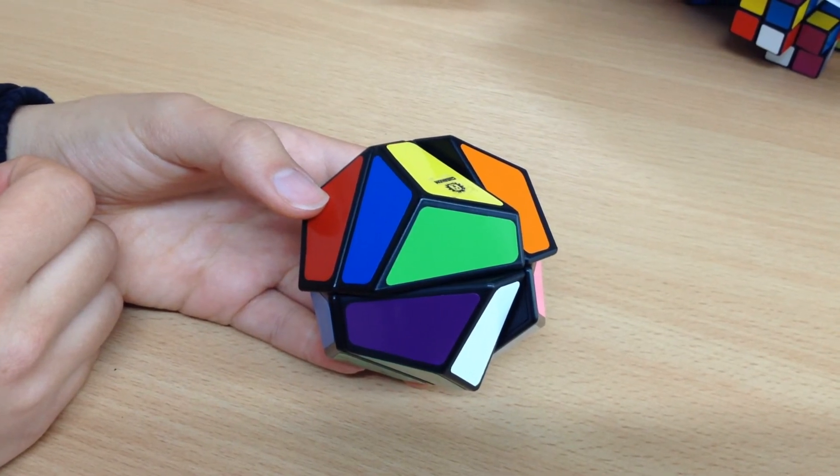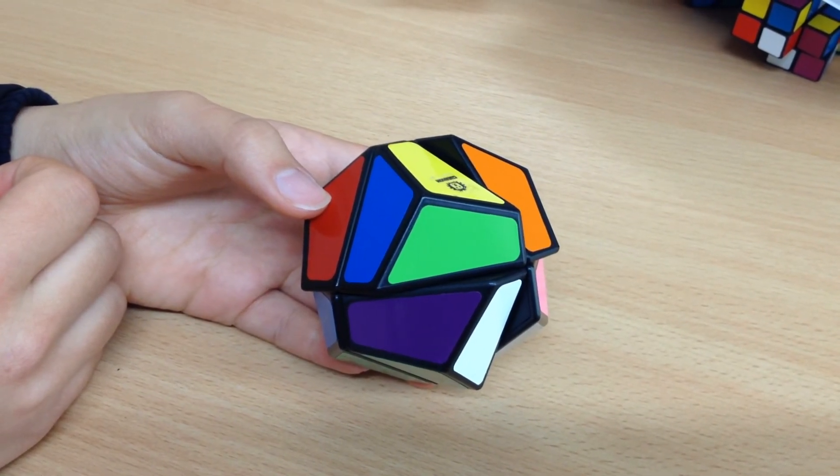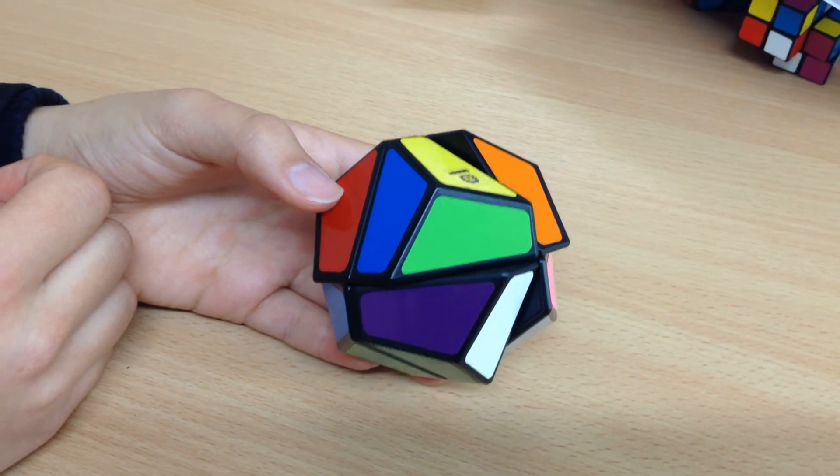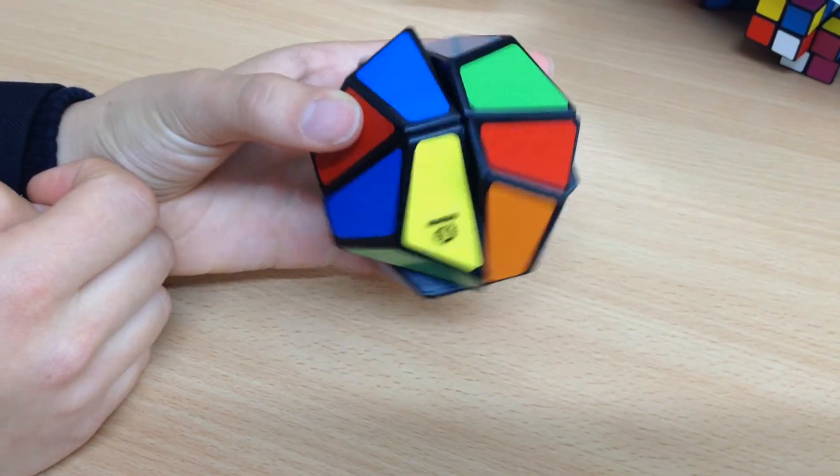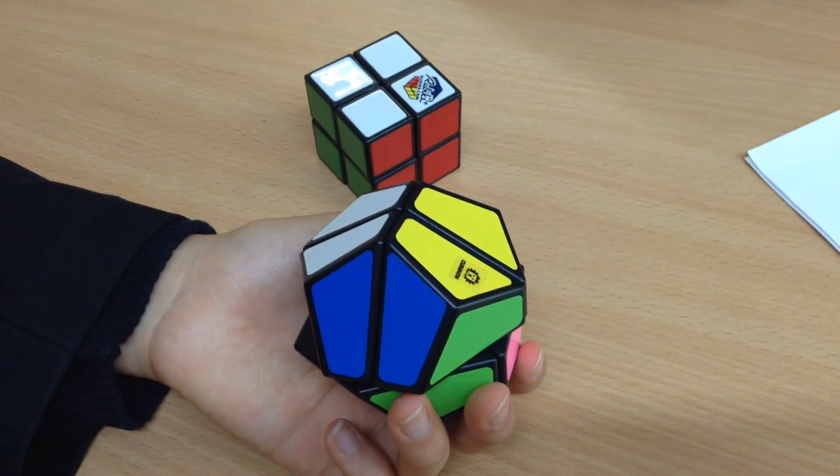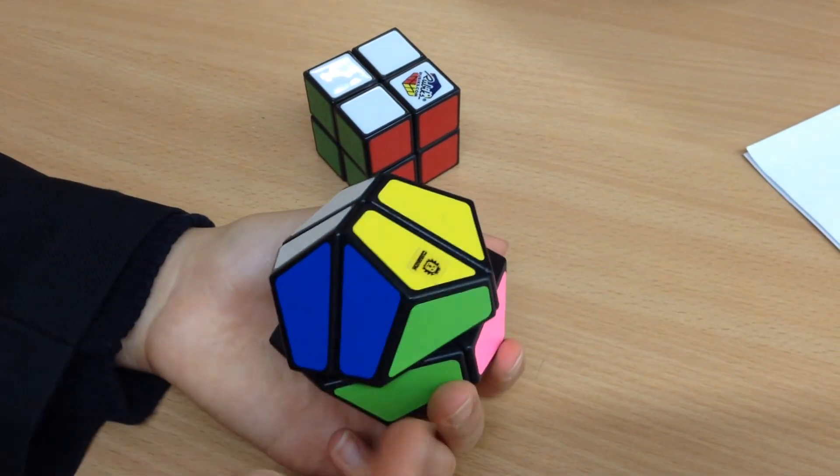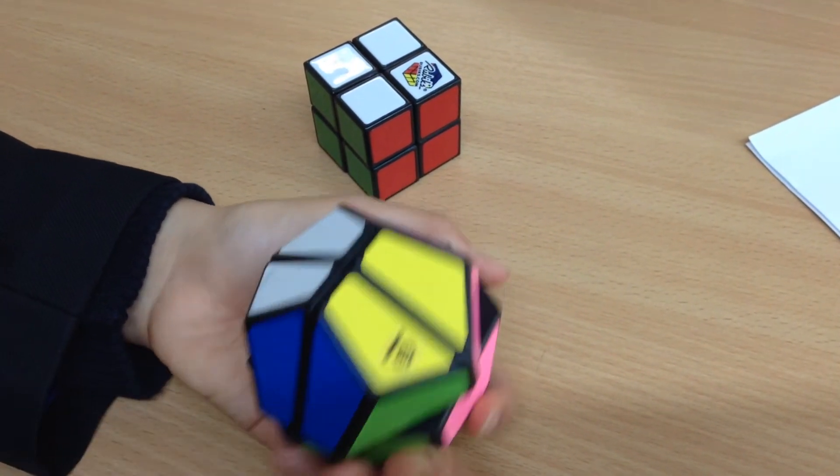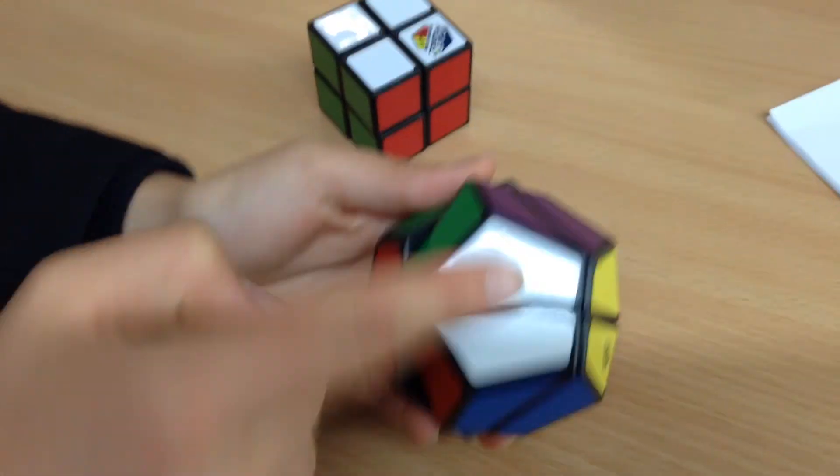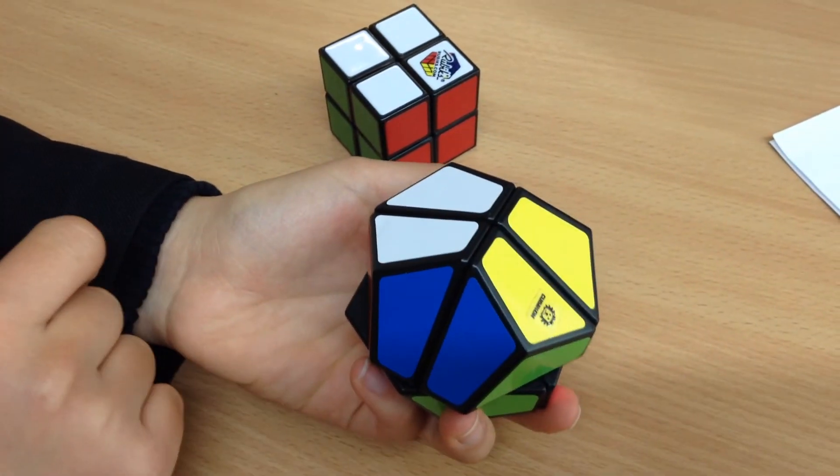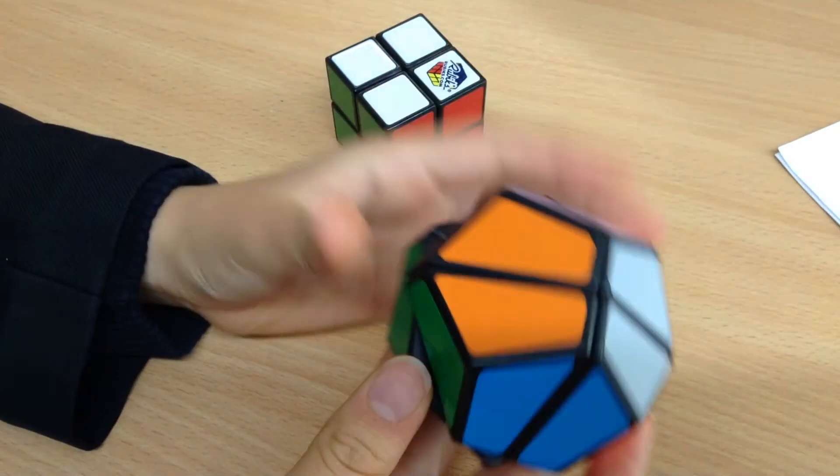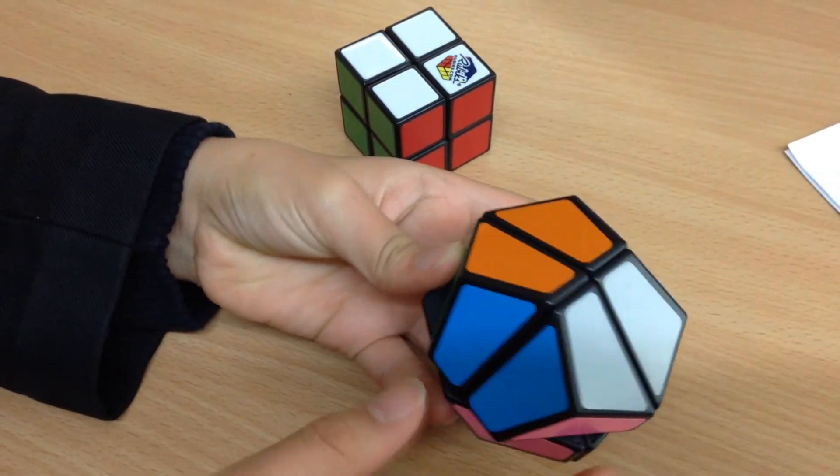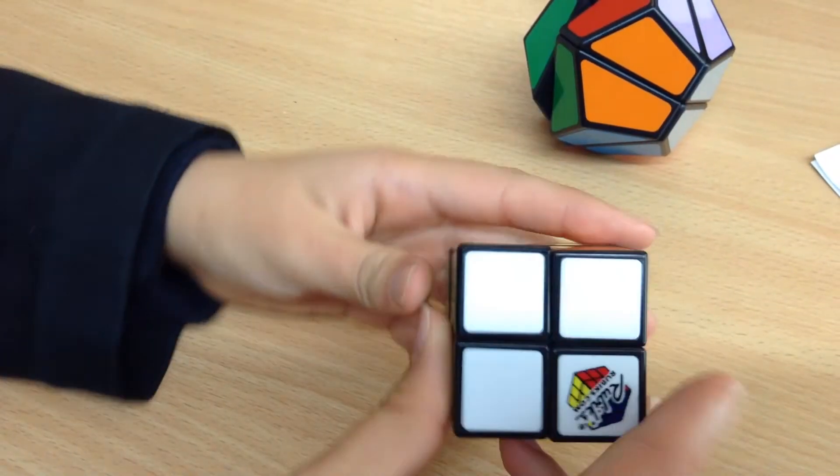This dodecahedron looks much harder to solve, especially because it goes out of shape when it's messed up. If you look carefully, you will see there are exactly one, two, three, four corners on the top half here. And on the bottom, the same again. It's exactly the same as the 2x2.